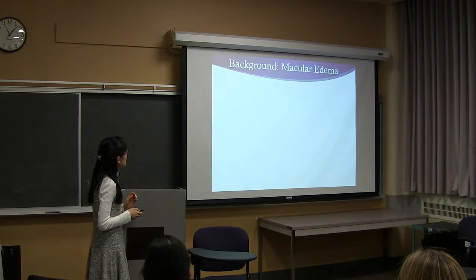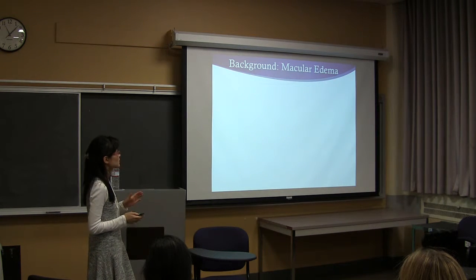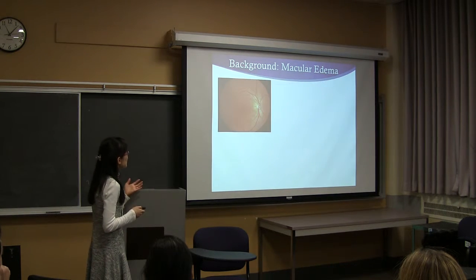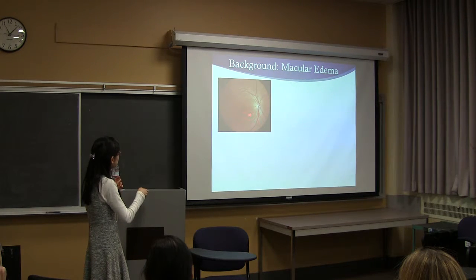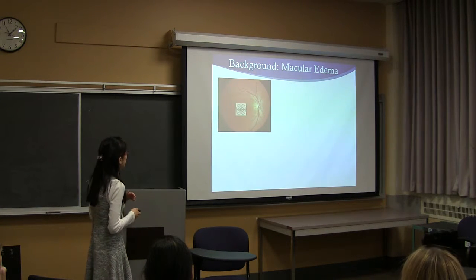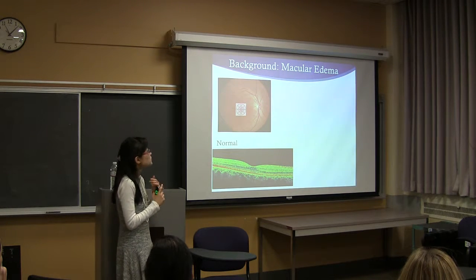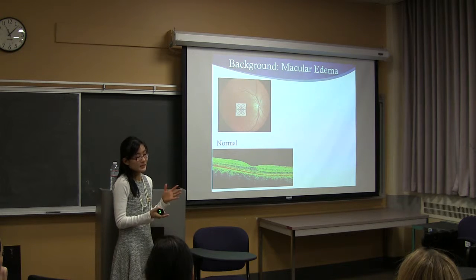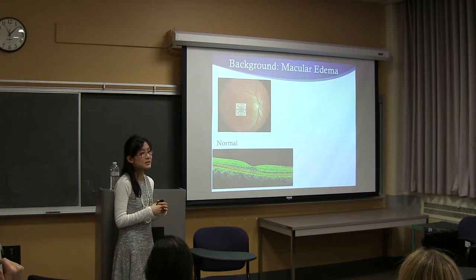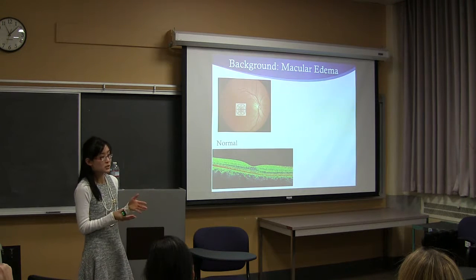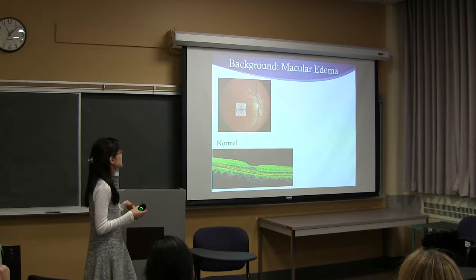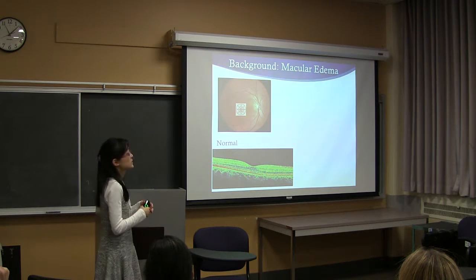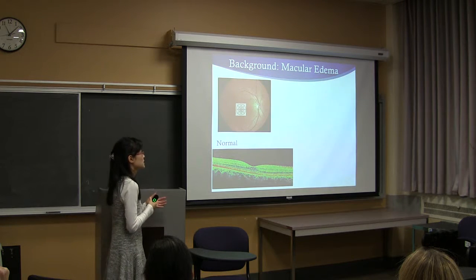To quickly review some background information on macular edema: macular edema is basically edema or swelling of the macula, which is the part of the retina responsible for your central vision. It's the most common complication you see in uveitis, as well as the leading cause of visual impairment. It's a tough complication to treat because good control of ocular inflammation from uveitis doesn't mean macular edema necessarily resolves, so you can have well-treated uveitis but still have vision impairment.